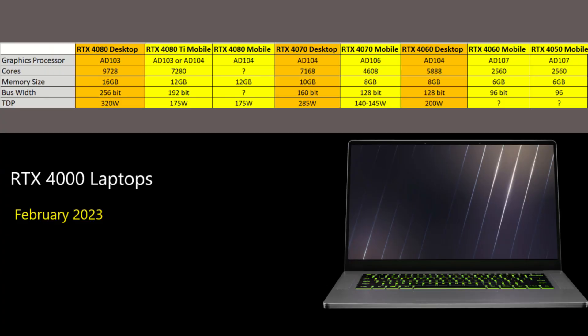Here I compare the specs of both the RTX 4000 desktop in orange to the mobile cards shown in yellow. As usual, NVIDIA has a big gap in core count between the desktop and mobile cards. Also, the memory bus is less. I can understand the need to lower the TDP to suit the mobile form factor, but I do wish they keep the other specs the same as the desktop cards.